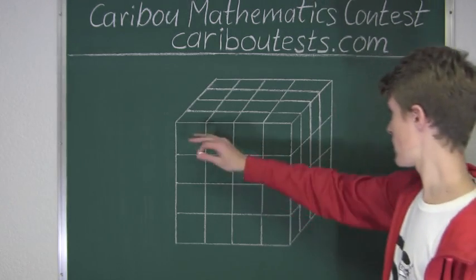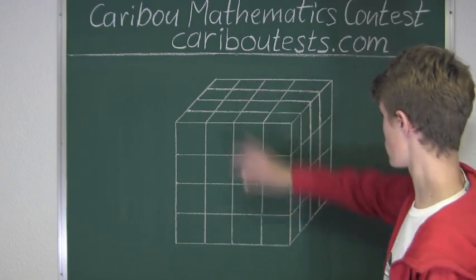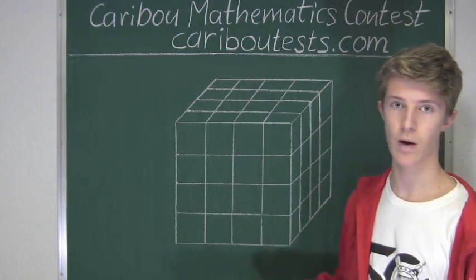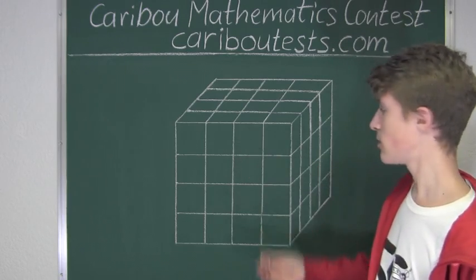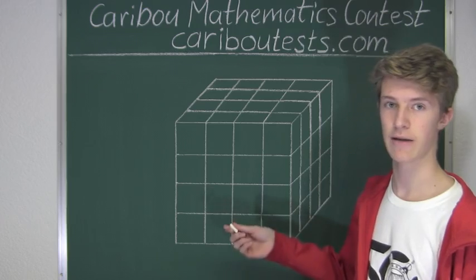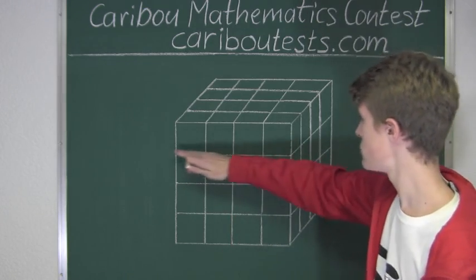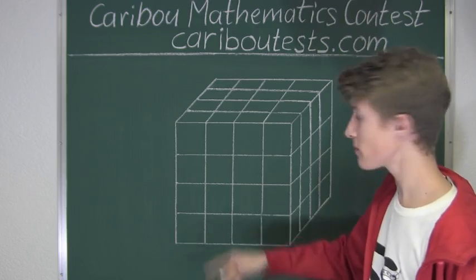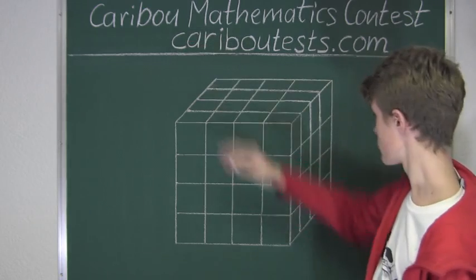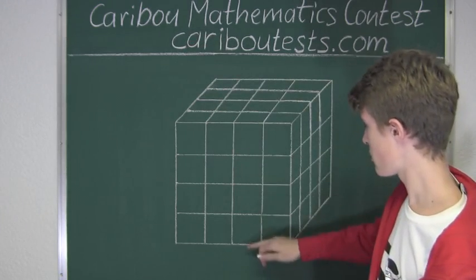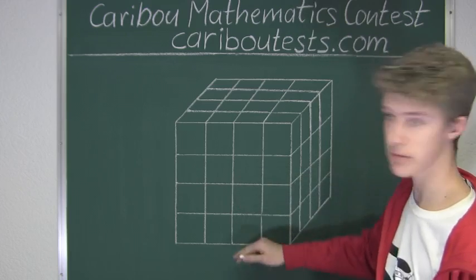So we know that these are all the cubes that are covered in wax. To find the number of small cubes that do not have any wax on them, we would have to slice off the top layer. So here, all those cubes will be gone. And that would leave us with a height of 3 centimeters.